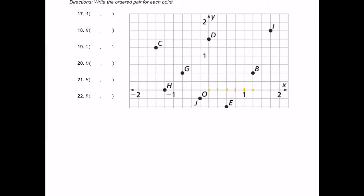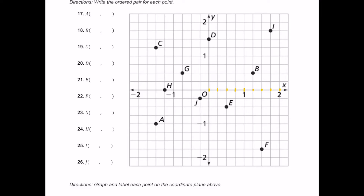Going further right: one and a quarter, one and a half, one and three quarters, two. Moving to the left: negative one fourth, negative one half, negative three fourths, negative four fourths which is negative one. Going further left: negative one and a quarter, negative one and a half, negative one and three quarters, and negative two.